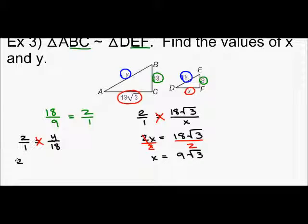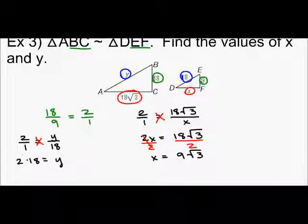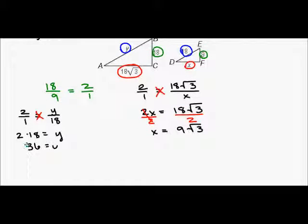Cross-multiply. We get 2 times 18 equals 1 times Y, or just Y. So, 36 is Y. So, my answer box, X is 9 root 3, and Y is 36.